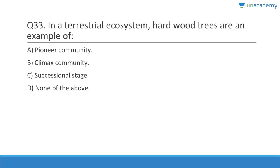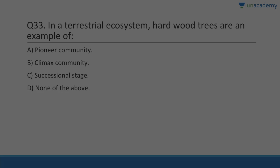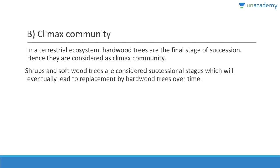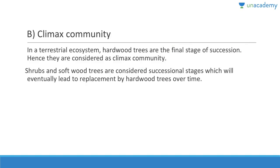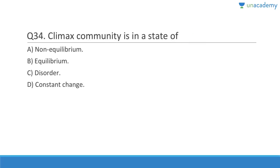Question 33: In a terrestrial ecosystem, hardwood trees are an example of a climax community — they are the final stage of succession and unless there is some drastic change they will not be replaced. Shrubs and softwood trees are considered successional stages which will eventually be replaced by hardwood trees over time.